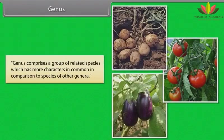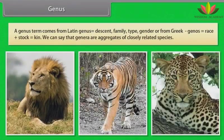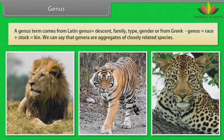Genus: A genus comprises a group of related species which has more characters in common in comparison to species of other genera. The term genus comes from Latin meaning descent, family, or type, and from Greek genos meaning race or stock, which is kin. We can say that genera are aggregates of closely related species.